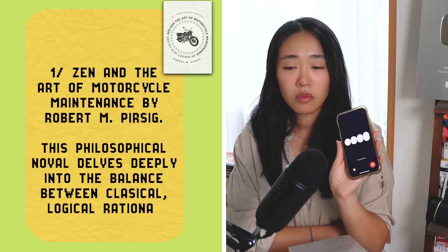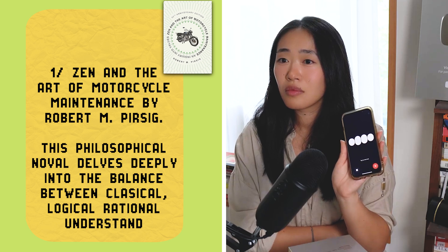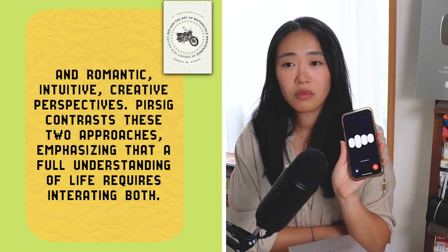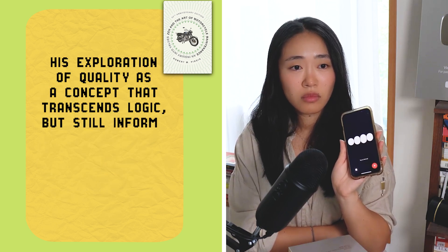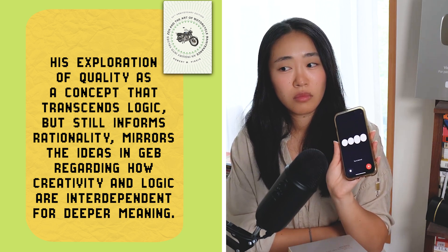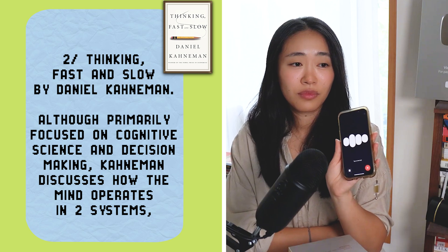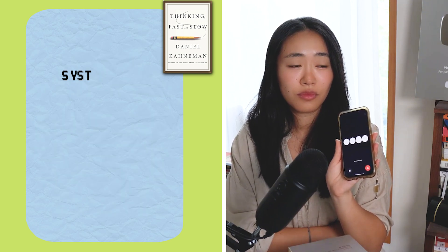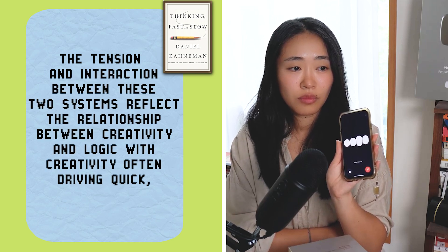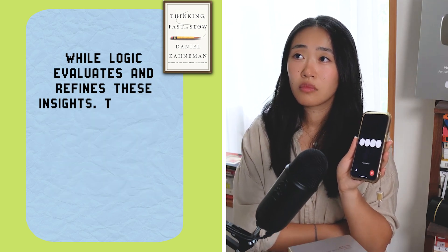One: Zen and the Art of Motorcycle Maintenance by Robert M. Pirsig. This philosophical novel delves into the balance between classical, logical, rational understanding and romantic, intuitive, creative perspectives. Pirsig contrasts these two approaches, emphasizing that a full understanding of life requires integrating both, and his exploration of 'quality' mirrors GEB's ideas about how creativity and logic are interdependent. Two: Thinking Fast and Slow by Daniel Kahneman — System 1, fast, intuitive, and creative; System 2, slower, logical, and deliberate. The tension between them reflects the relationship between creativity and logic.